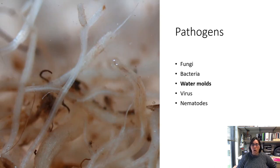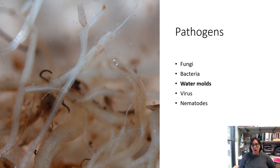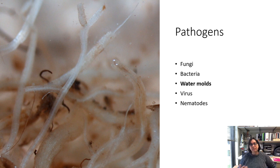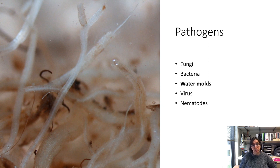Water molds, or oomycetes, look like fungi to most people — they still have that thread-like body and produce propagules and spores — but they are different, particularly in terms of management. In cannabis, our three really common water molds are downy mildew, Pythium, and Phytophthora. Don't get confused: there are also fungal root rots and fungal mildews. The downy mildews, Pythium, and Phytophthora are generally in the oomycete category.